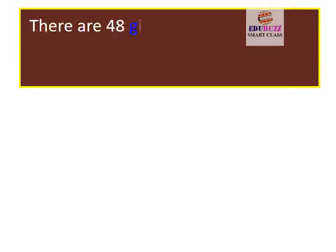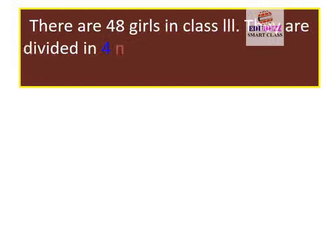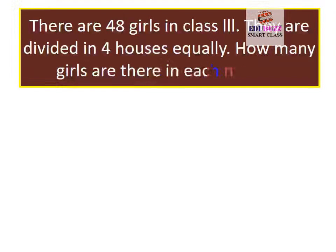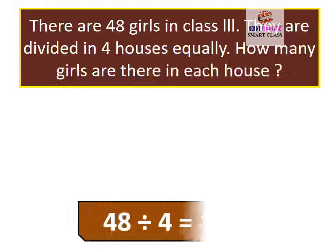There are 48 girls in class 3. They are divided in 4 houses equally. How many girls are there in each house? 48 divided by 4 is equal to 12.